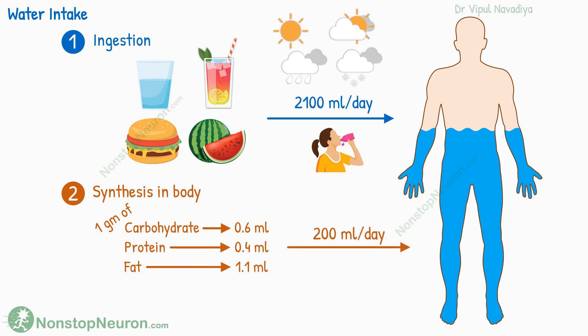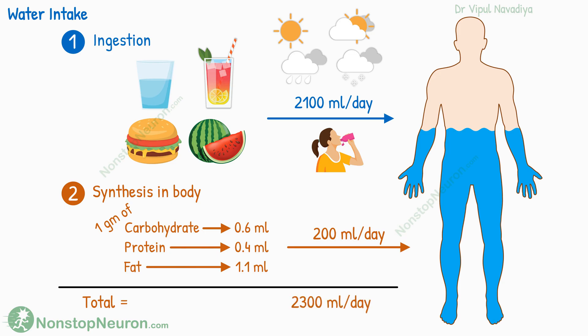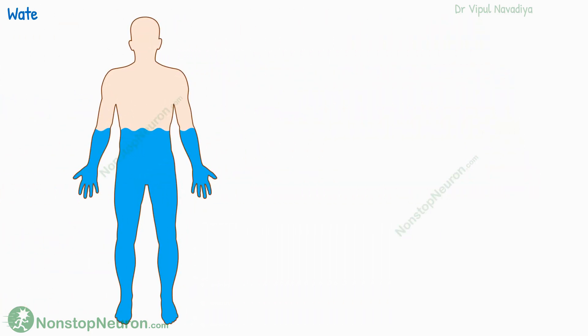The total amount added by metabolic activity is about 200 milliliters per day. The total intake from all these sources is about 2300 milliliters per day. Now let's talk about the water output.